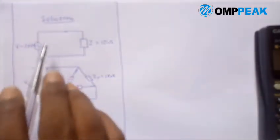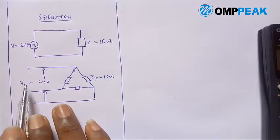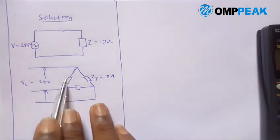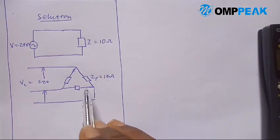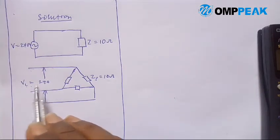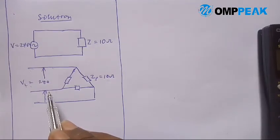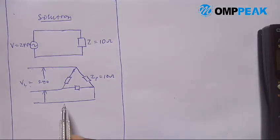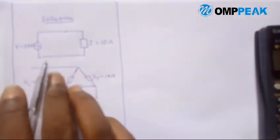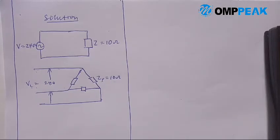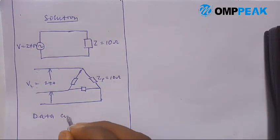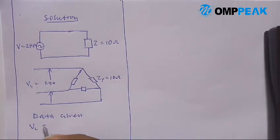The line voltages are 240 volts and the phase impedance — each of these — is 10, 10, 10 ohms, so they are balanced. The line voltage is the total voltage used in the system, while the phase impedance is the impedance in the system. Since it's 10 ohms, each phase has a 10 ohm load. The data given are: line voltage = 240 volts, phase impedance = 10 ohms.